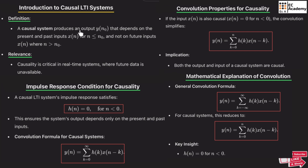A causal system produces an output y(n₀) that depends on the present and past input x(n) for n less than or equal to n₀, and not on future input x(n) where n is greater than n₀. A causal system is one whose output depends upon the present and past values of input, and will not depend upon the future value of input.